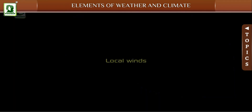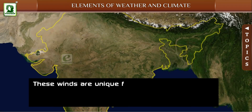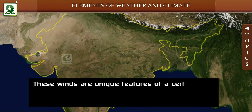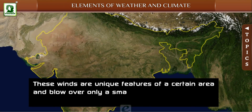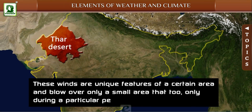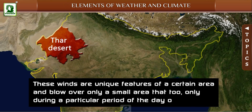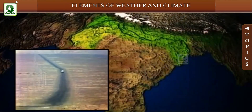Local winds are unique features of a certain area and blow over only a small area, and only during a particular period of the day or year. For example, the loo in the northern plains of India.